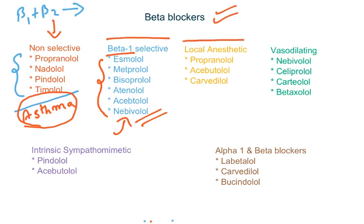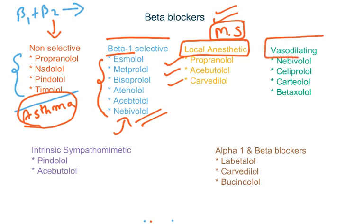Some beta blockers also have local anesthetic activity, also known as membrane stabilizing activity. Examples are propranolol, acebutolol, and carvedilol. The next class is vasodilating beta blockers. These agents can release nitric oxide — which causes vasodilation — so these are beta blockers with vasodilating properties. Examples include nebivolol, celiprolol, carteolol, and betaxolol.